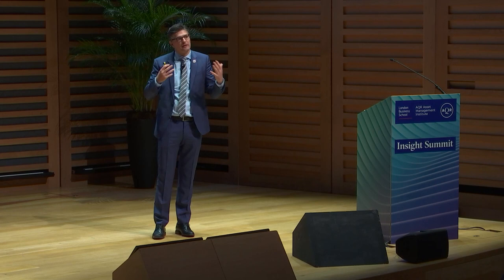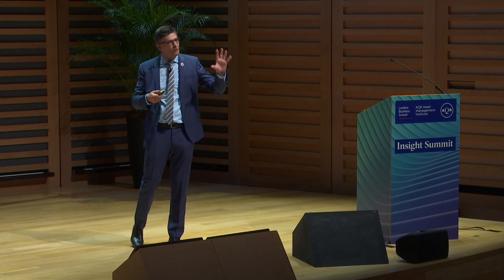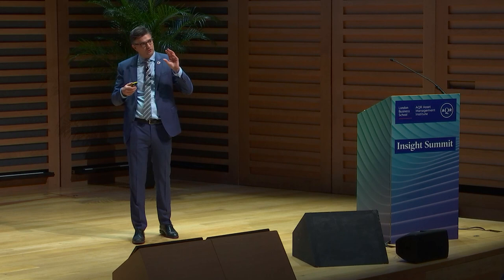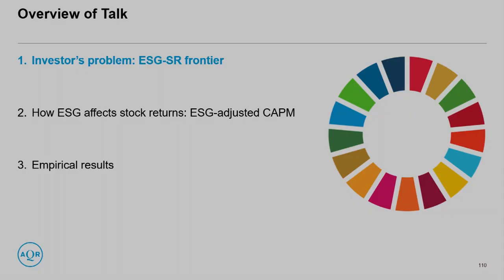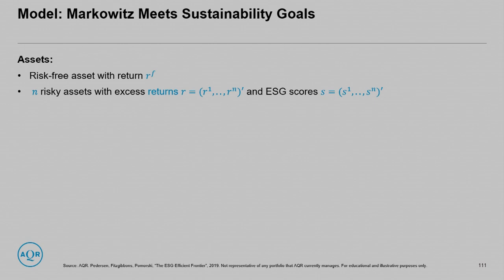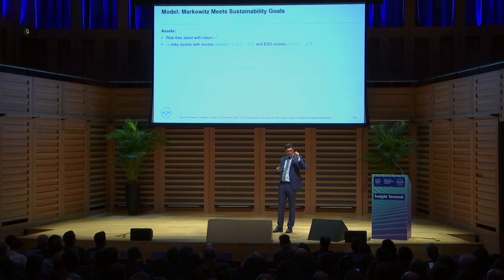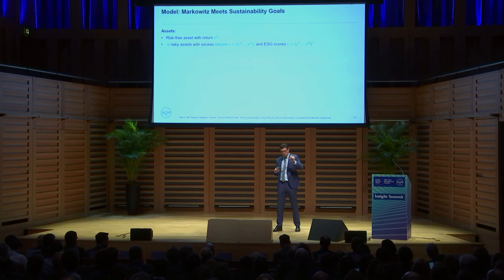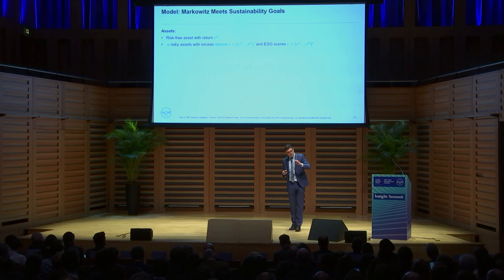Let me get into the actual paper. I'll first show what it looks like from an investor's perspective, then get to whether ESG raises or lowers returns, and then show some more empirical evidence. We have a model with a risk-free rate and a number of risky assets. What's new is that for every asset, it's not just that we have an expected return and a risk — we also have for every stock an ESG score. In the empirical setting, I'll tell you how to measure it in practice.